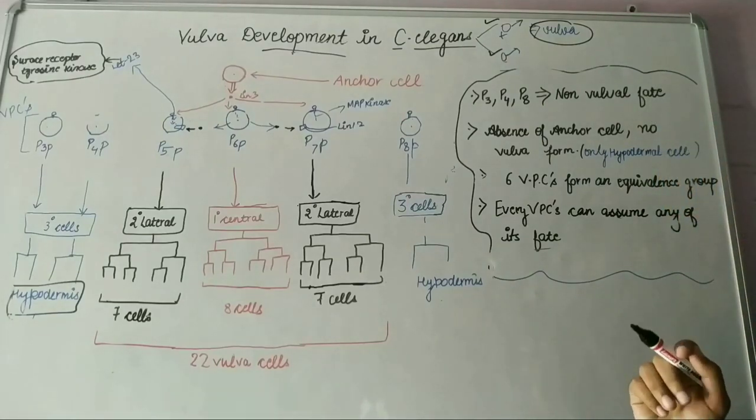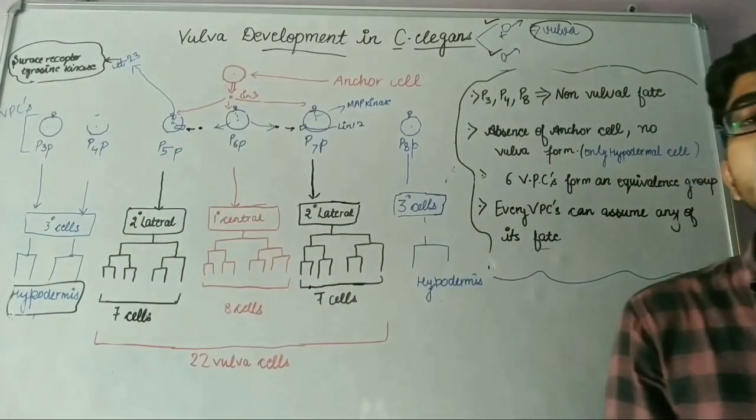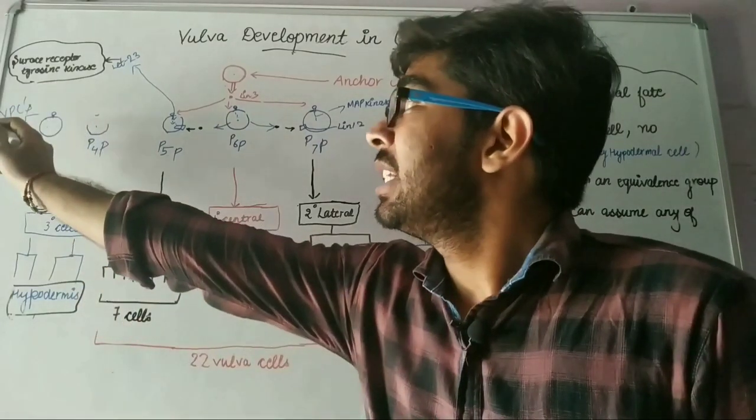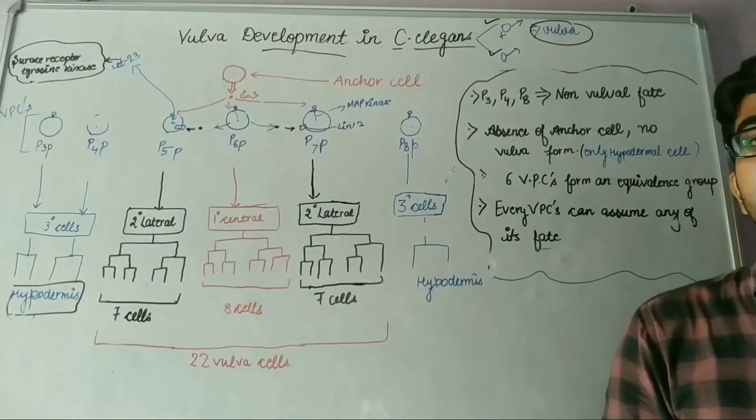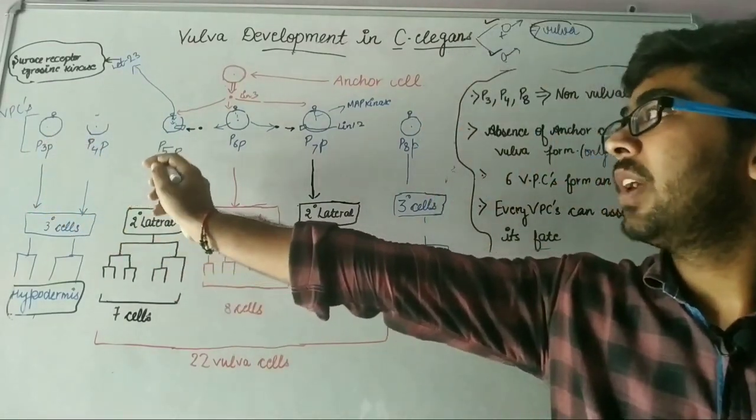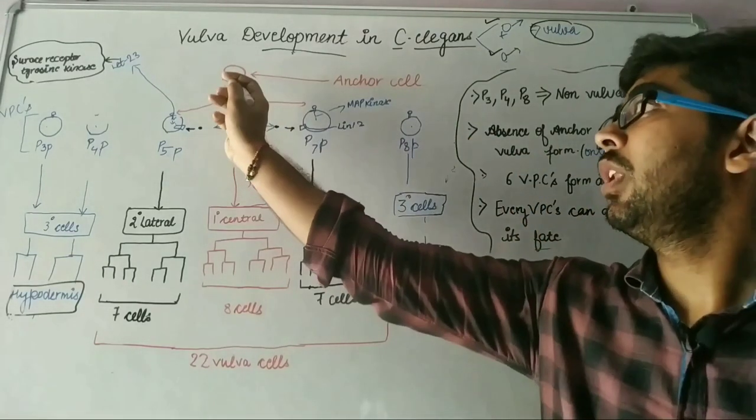There are two types of cells: anchor cell and VPC. VPC stands for Vulval Precursor Cell. There are six types of vulva precursor cells: P3P, P4P, P5P, P6P, P7P, and P8P.